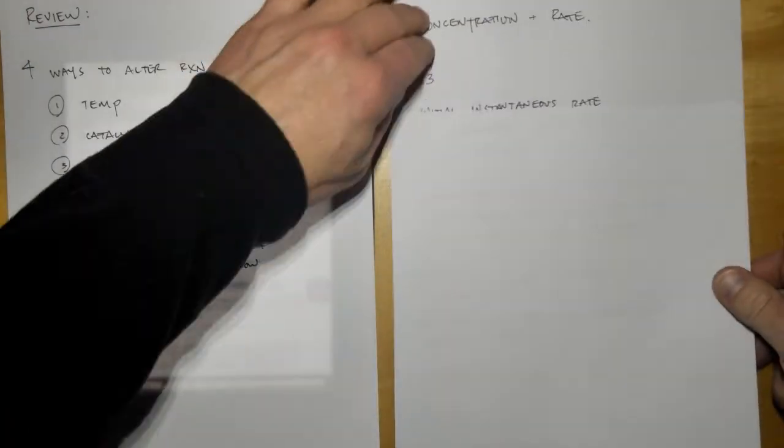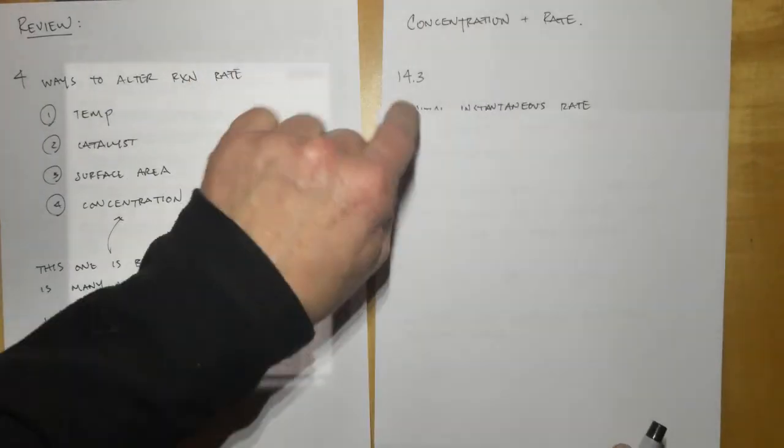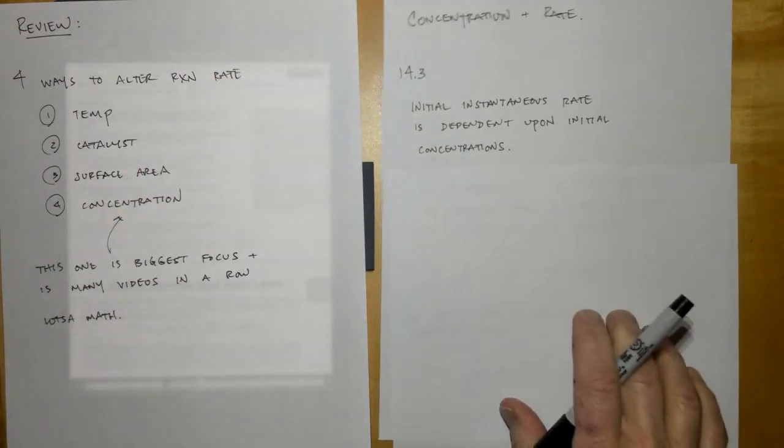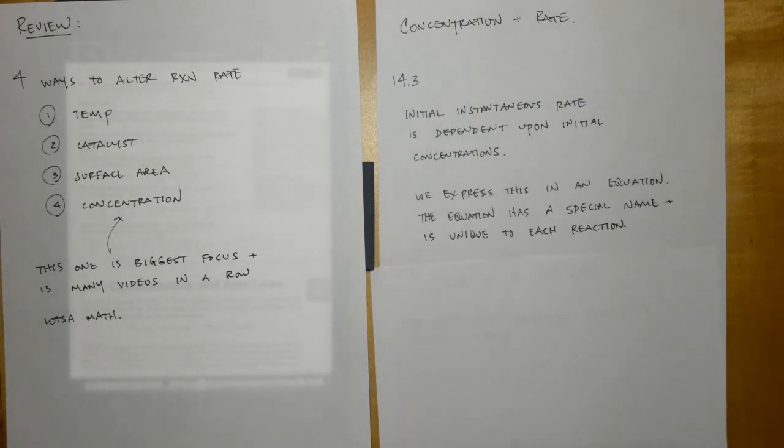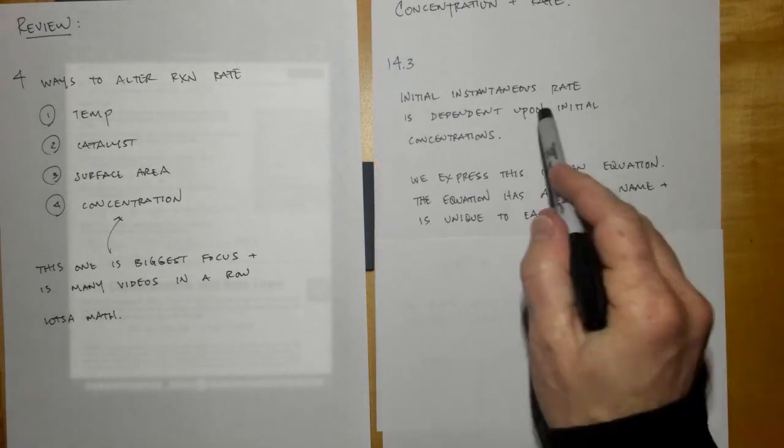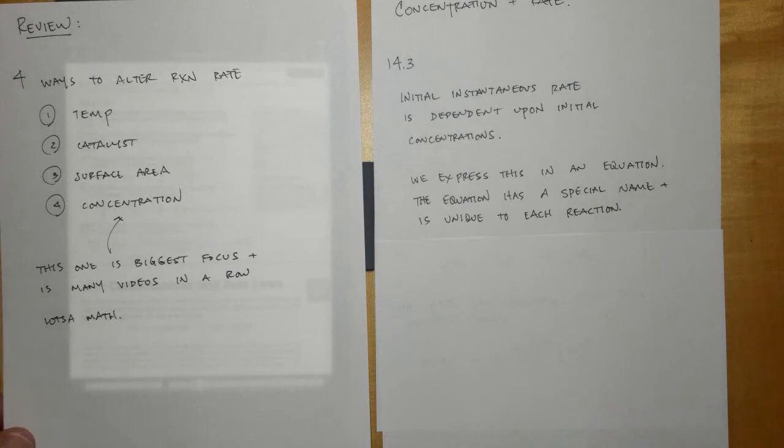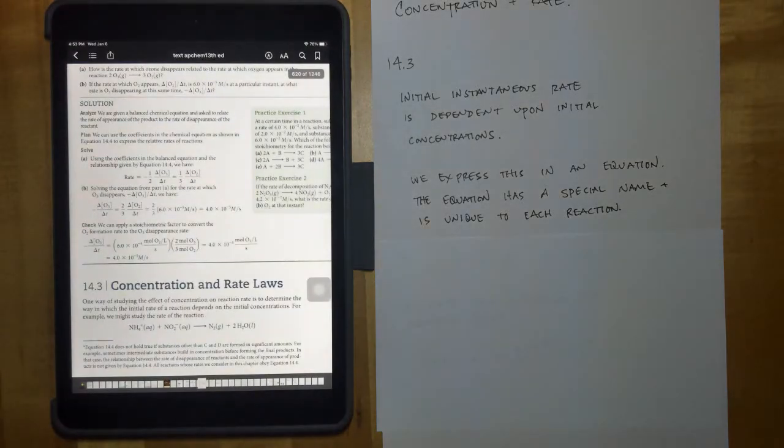So concentration and rate section 14.3 in your textbook. The initial instantaneous rate is dependent upon the initial concentrations of the reactants. We express this in an equation and the equation has a special name and is unique to each reaction at a particular temperature.